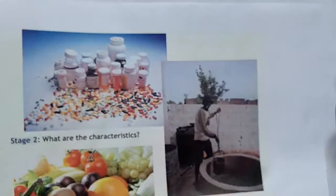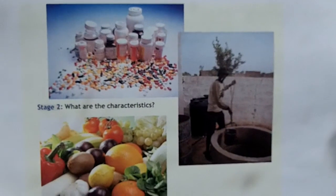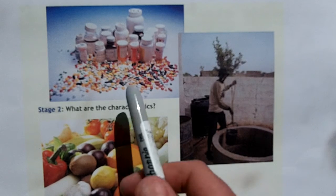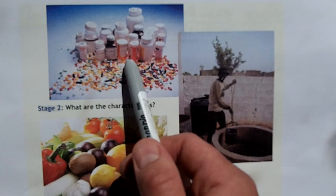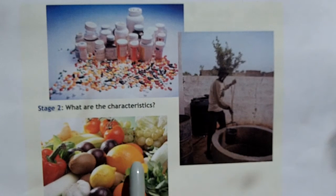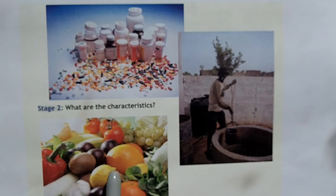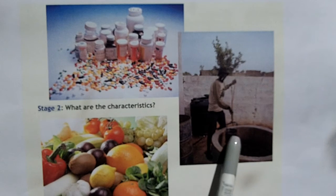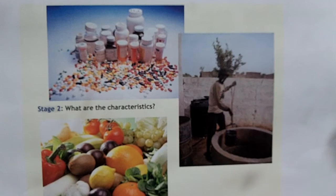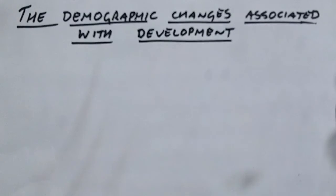Moving into Stage 2, you've got improvements in things like medicine, healthcare, diet — better nutritional intake — and things like access to clean running water. That means the death rate starts to fall and people start to live longer.